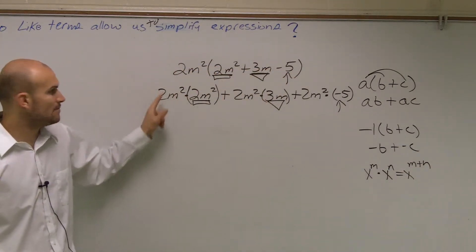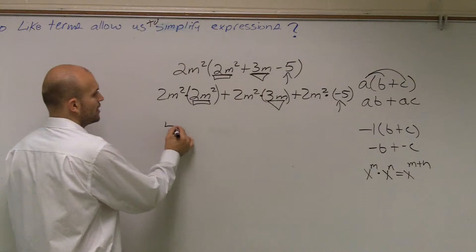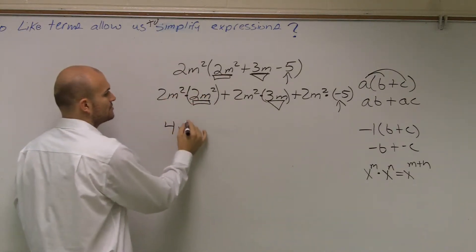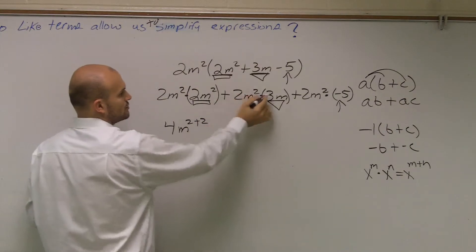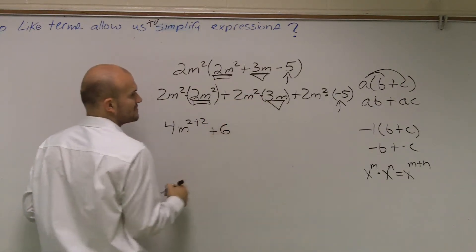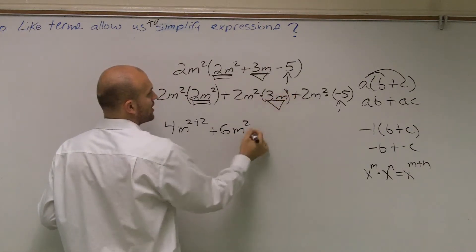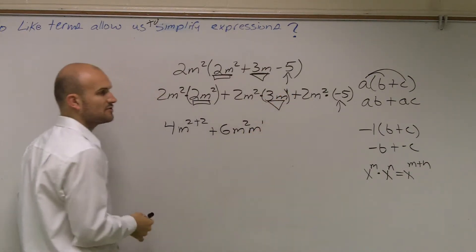So here, I multiply my 2 times 2, which is 4. m squared times m is going to be m to the 2 plus 2. 2 times 3 is going to give me a positive 6. m to the 2 plus, there's an exponent 1 up there, m to the first power.